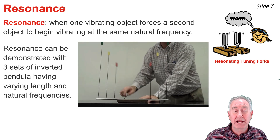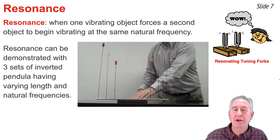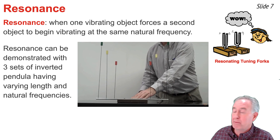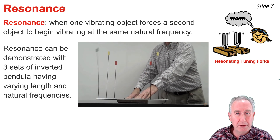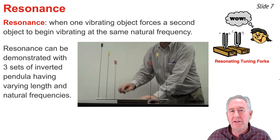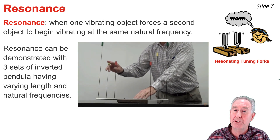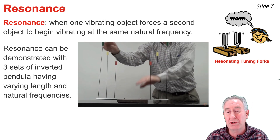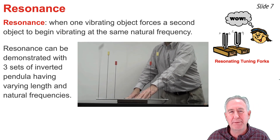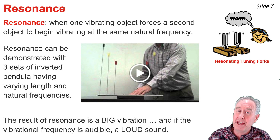Resonance can also be demonstrated with three sets of inverted pendulums of varying length and natural frequency. When the red pendulum bob is set vibrating, it sets the other red pendulum bob into vibrational motion — but never the yellow or green bob, because they don't share the same natural frequency. Red forces red, yellow forces yellow, and green forces green. Whenever resonance occurs, the result is a large vibration, and if audible, a loud, sustained sound.